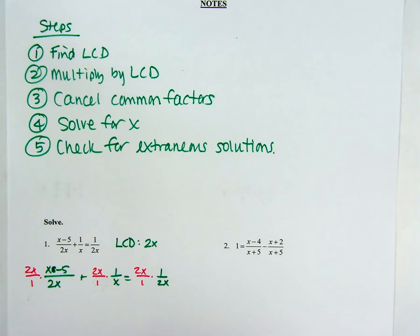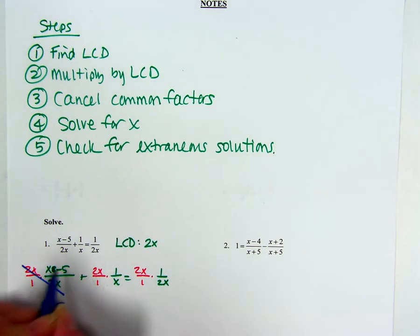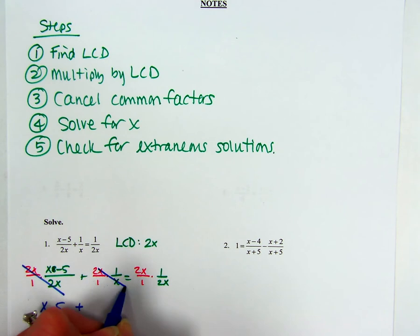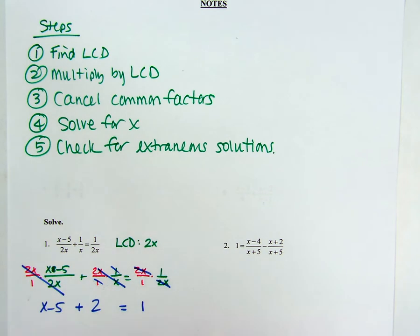So you're looking for common terms. 2Xs cancel out, so all you're left with is X minus 5. We don't need the 1s, right? So we can cross off the Xs and the 1s. We're just left with 2. Here, 2Xs cancel, and you're left with 1 over 1, which is just 1.